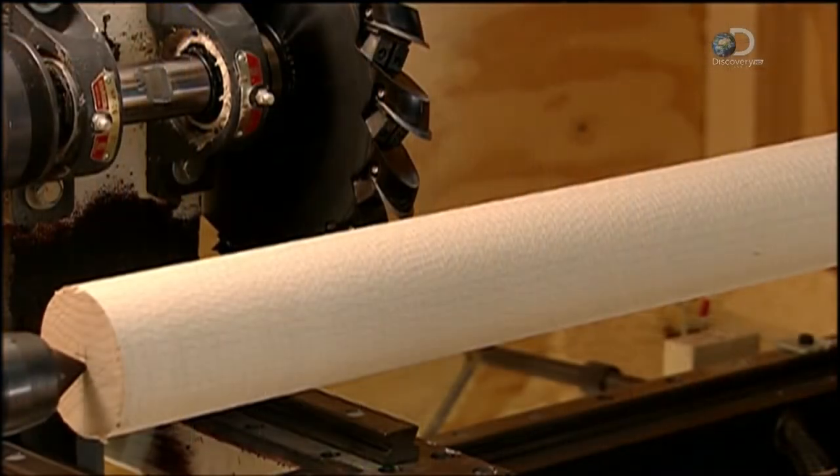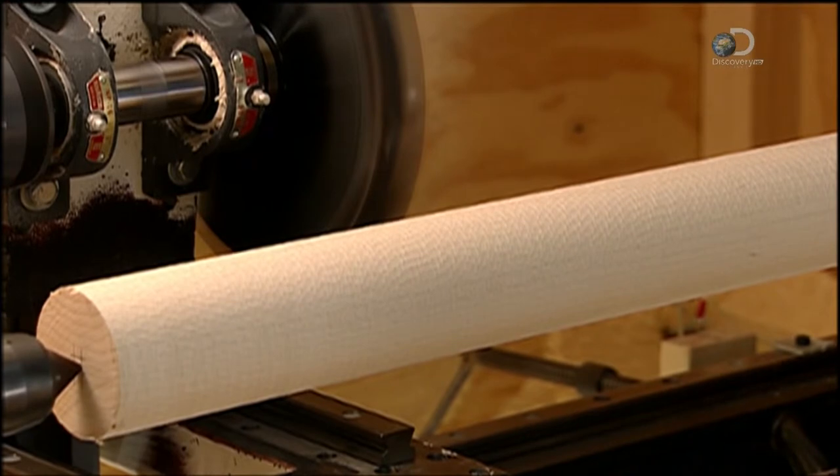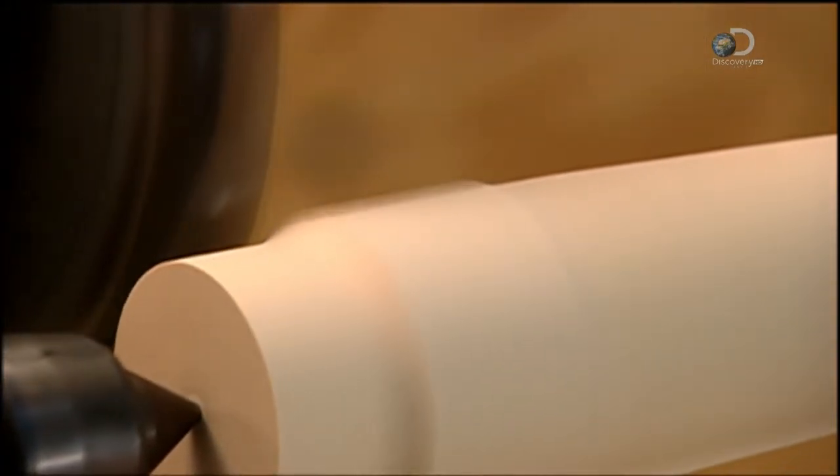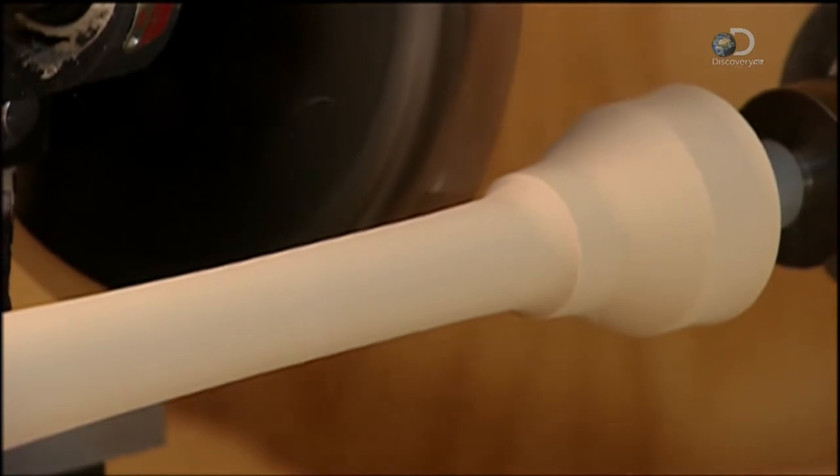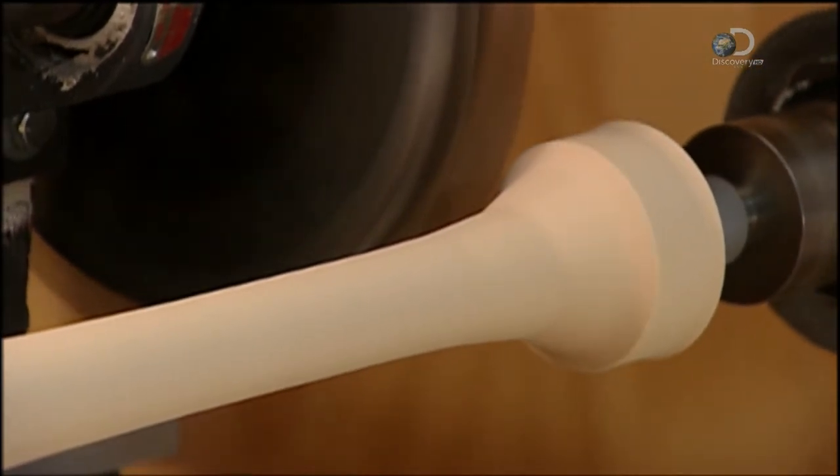The blank goes onto the XY machine. A computer guides the cutter as it moves on rails and carves into the blank. It whittles two and a half centimeters of wood from the blank in order to form a handle.